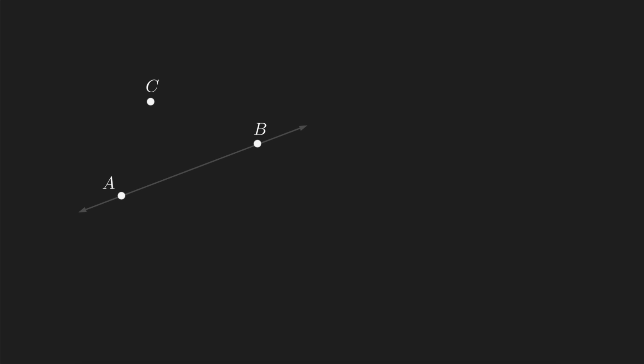We start with the crucial idea that the point on line AB that is closest to point C, let's call it point D, forms a line segment with point C that is perpendicular to line AB.